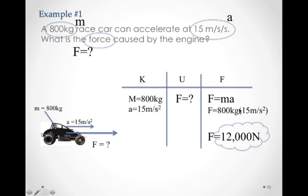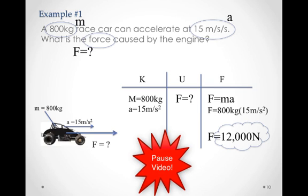So F equals 800 kilograms times the 15 meters per second squared. We do our plug-ins and we remember our units in that. And 800 times 15 is 12,000 Newtons. Quite a bit of force for this little race car here. Please note how to do these types of problems before we go on.